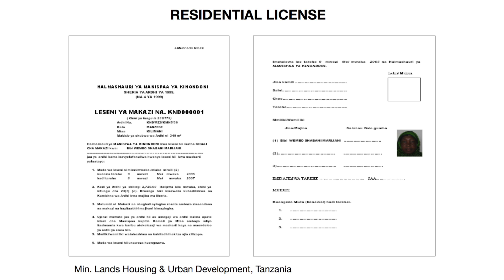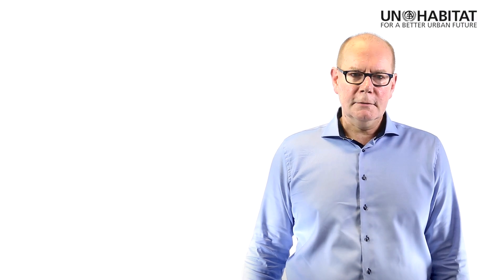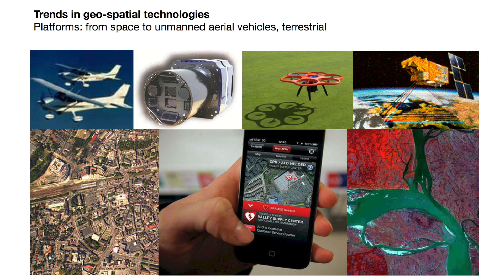Now I'd like to look at some of the major trends in geospatial technologies, starting with the platforms being used. These range from terrestrial devices such as handheld GPSs, smartphones, and traditional surveying equipment, through digital aerial photography, satellite-based systems, and even unmanned aerial vehicles — an example of which you can see in the middle of this slide.